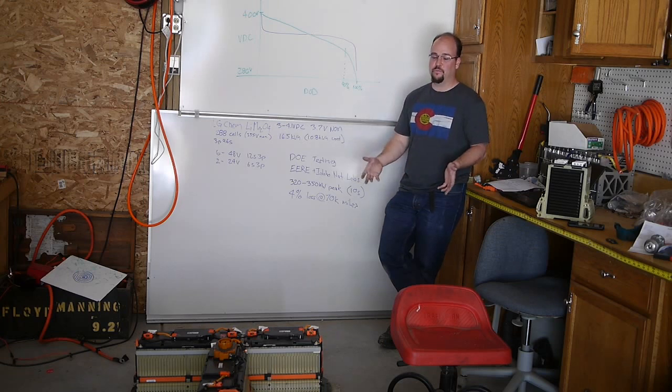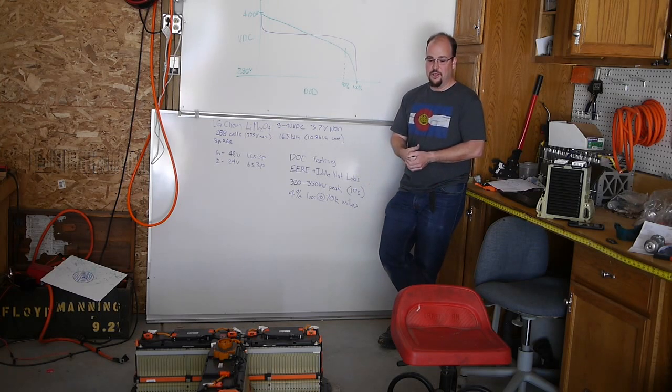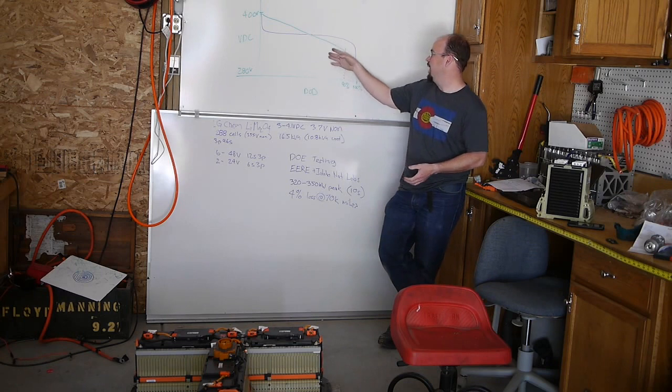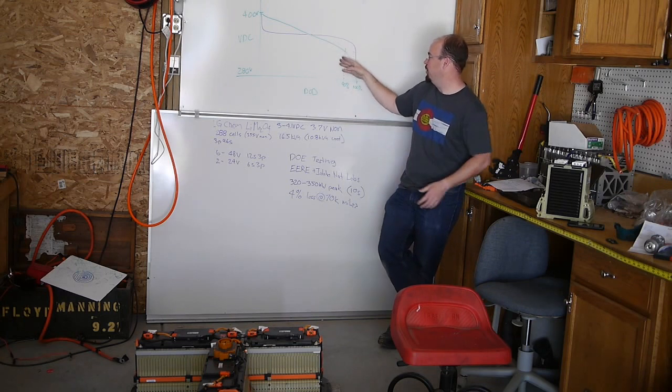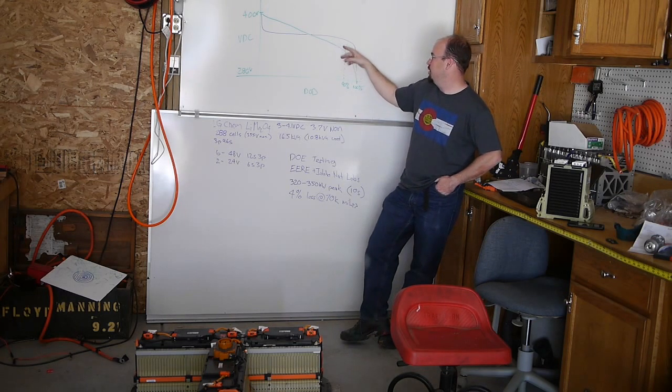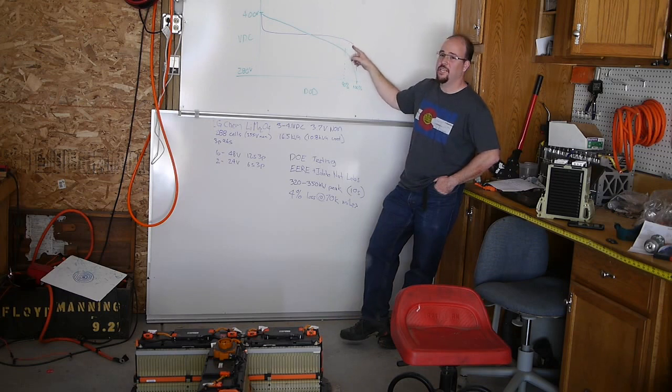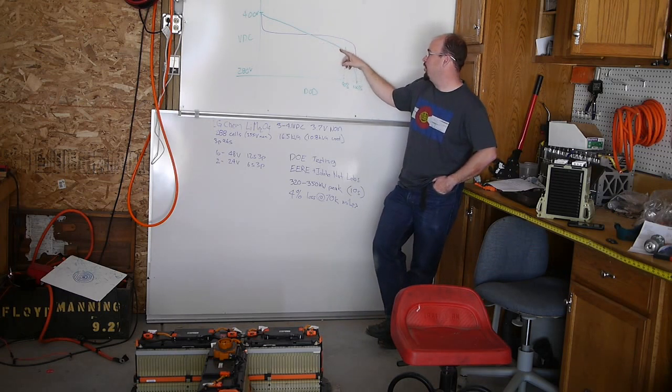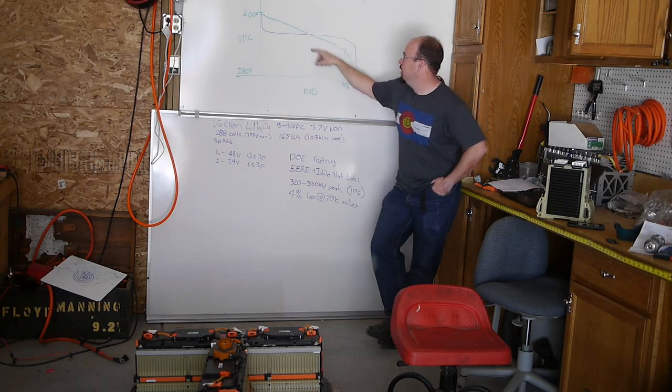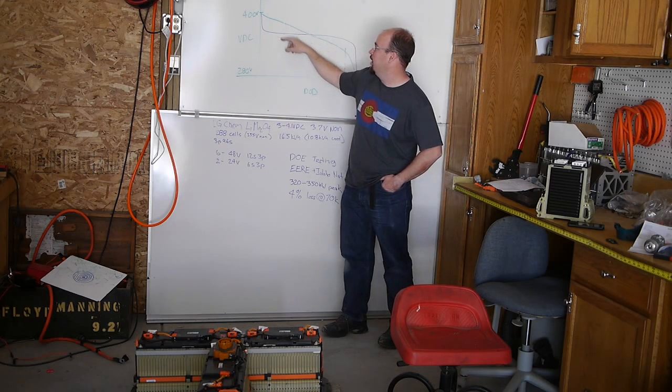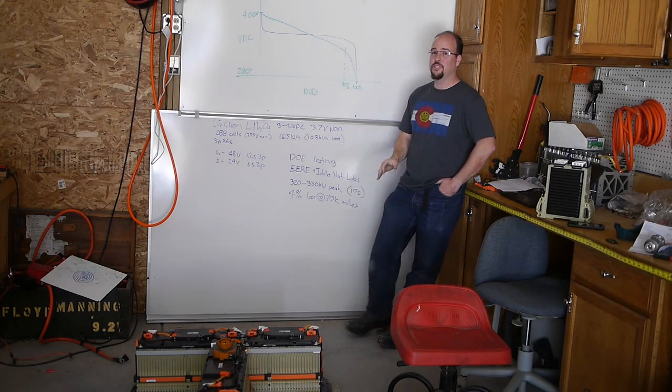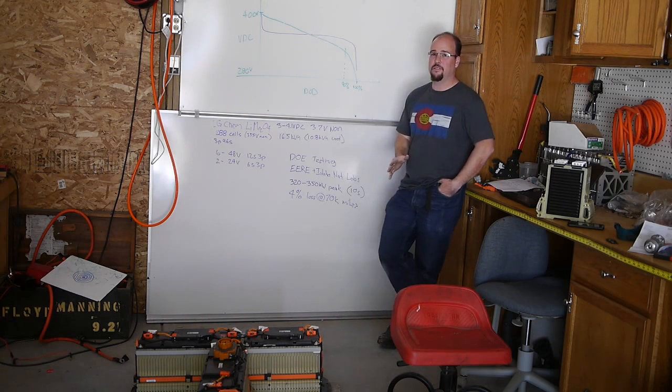Originally I was going to bottom balance all of this, but there's really no need. The whole point of bottom balancing was to make sure that you knew where the state of charge was at. With this linear curve, if they're all at the same voltage, whether that voltage is here, or here, or here, as long as they are the same voltage, they're going to have pretty close to the same state of charge.